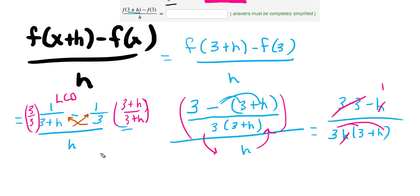Multiplying this out on top, I have minus 1 is all that's left. On the bottom, 3 times 3 is 9, and 3 times h is 3h.